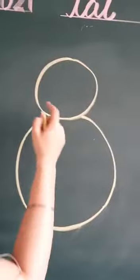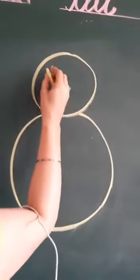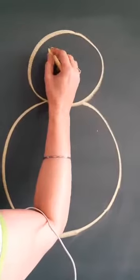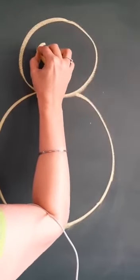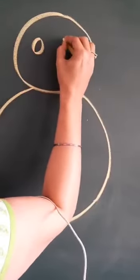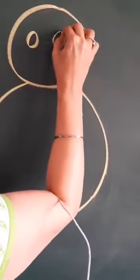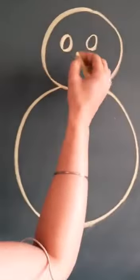First of all, we will complete the face of the cat. For face, face ko complete karne ke liye here, we will draw two eyes. Equal eyes banani hai aapko aise. Thik hai, beta?